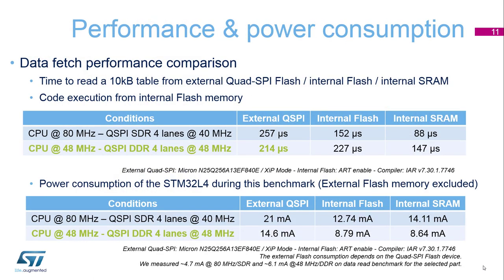To measure the performance of the Quad SPI, we use a simple benchmark reading a 10KB table from the Quad SPI into internal RAM. We use for comparison the internal flash and internal SRAM memories too. The code itself is executed from the internal flash memory.